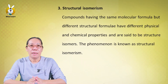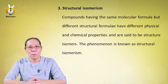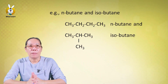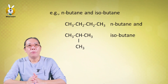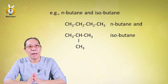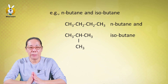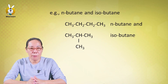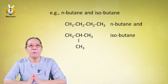When compounds share the same molecular formula but differ in structure, the phenomenon is known as structural isomerism. For example, butane and isobutane are structural isomers — they have the same molecular formula but different carbon arrangements.